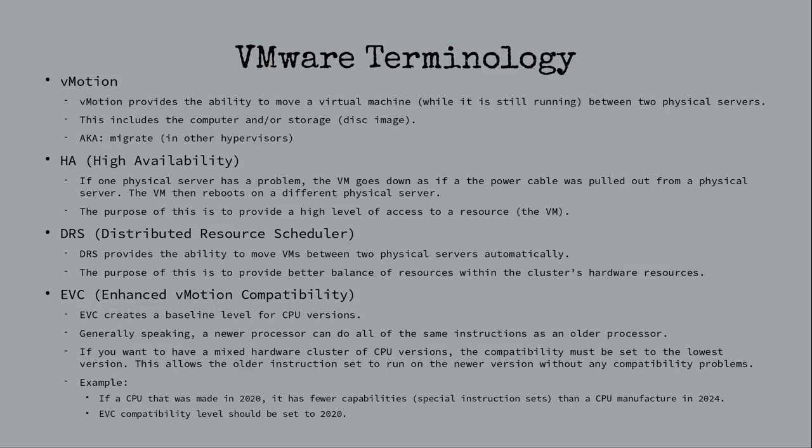There are two options. Option one: set EVC to the old cluster's CPU level, vMotion VMs live to the new cluster, then take a planned outage later to upgrade EVC and get the new instruction set — useful when you need the old hardware out immediately because the lease is up. Option two: create the new cluster with the EVC level of the new hardware, then completely shut down the VM, vMotion it to the new cluster, set the new EVC level, then start the VM. Either way, there's an outage — it's just a matter of when. The later option gives you flexibility to take it on your own schedule.